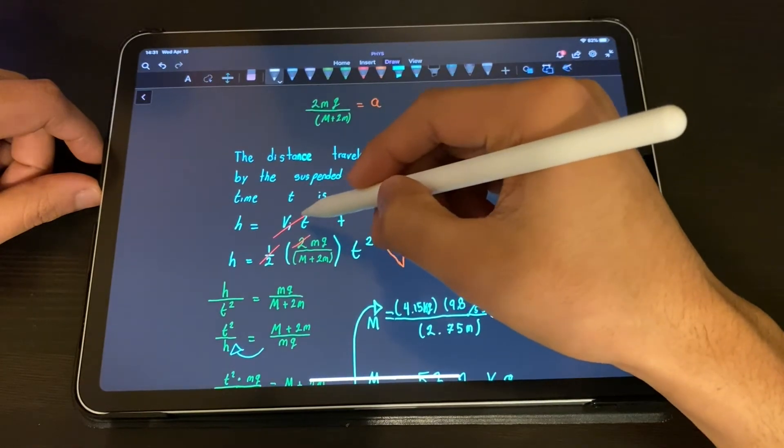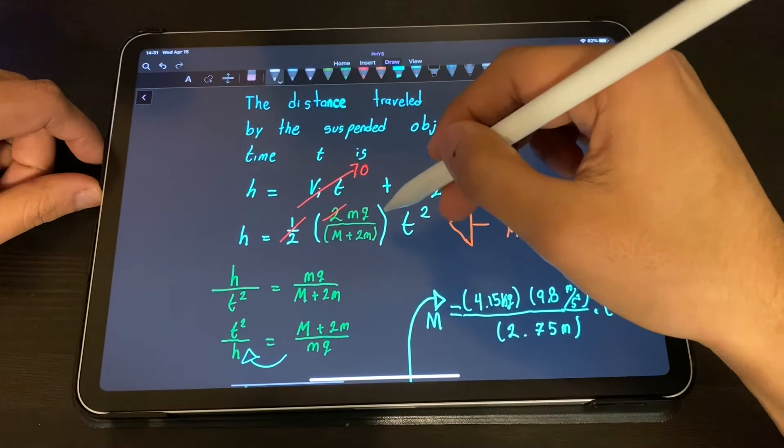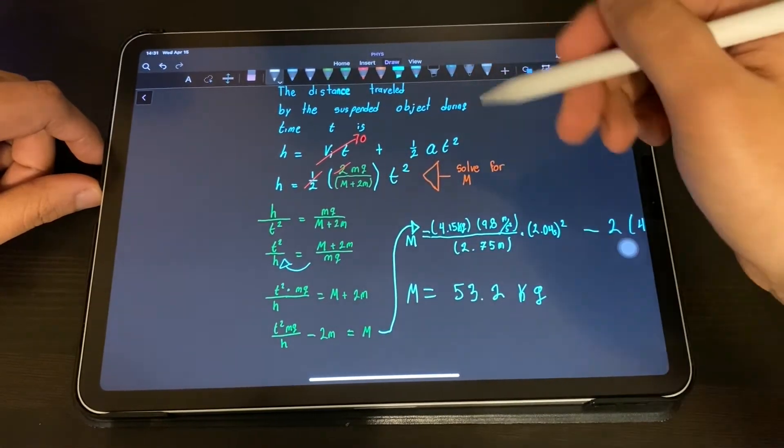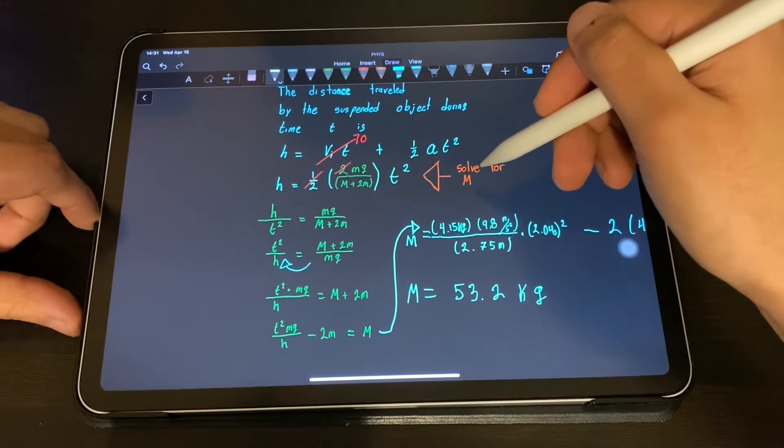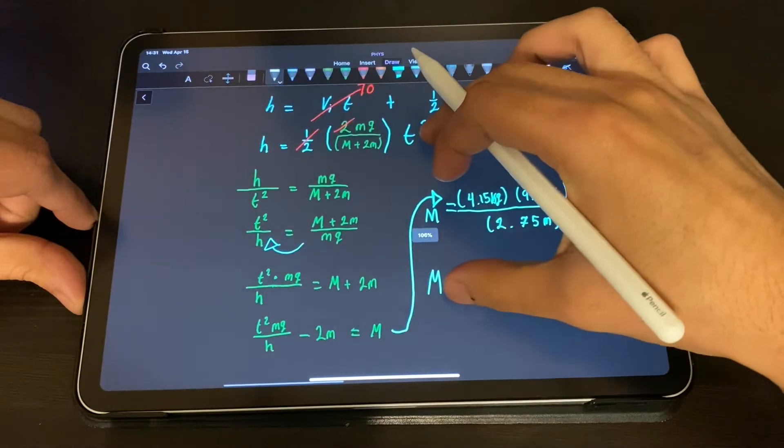We don't have an initial velocity so that goes to zero. We do some algebra and we have to solve for m because we're looking for the mass of the disk.